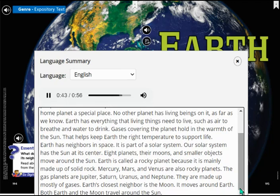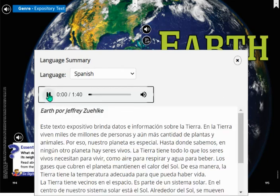Gases covering the planet hold in the warmth of the sun. That helps keep Earth the right temperature to support life. Earth has neighbors in space. It is part of a solar system. Our solar system has the sun at its center. Eight planets, their moons, and smaller objects move around the sun. Earth is called a rocky planet because it is mainly made up of solid rock. Mercury, Mars, and Venus are also rocky planets. The gas planets are Jupiter, Saturn, Uranus, and Neptune. They are made up mostly of gases. Earth's closest neighbor is the moon. It moves around Earth. Both Earth and the moon travel around the sun.